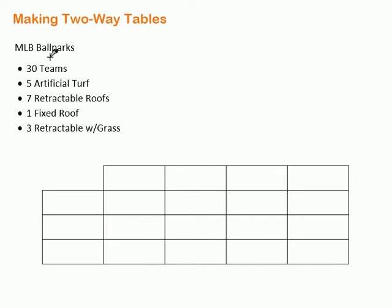I have some information related to Major League Baseball ballparks. There are 30 teams in the Major Leagues. Five of the ballparks have artificial turf, seven have retractable roofs, one has a fixed roof, and three have a retractable roof with natural grass. We're going to organize this using a table, categorizing the information by two different things.